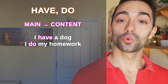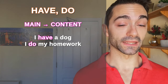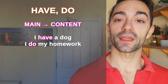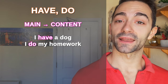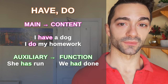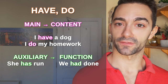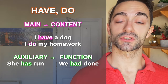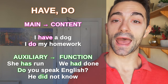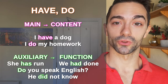As auxiliary verbs, have, do, and be create grammar context for the main verb. Have creates the perfect aspect: 'She has run' — present perfect; 'We had done' — past perfect. Do is used to create interrogatives — 'Do you speak English?' — and negatives: 'He did not / does not know.'